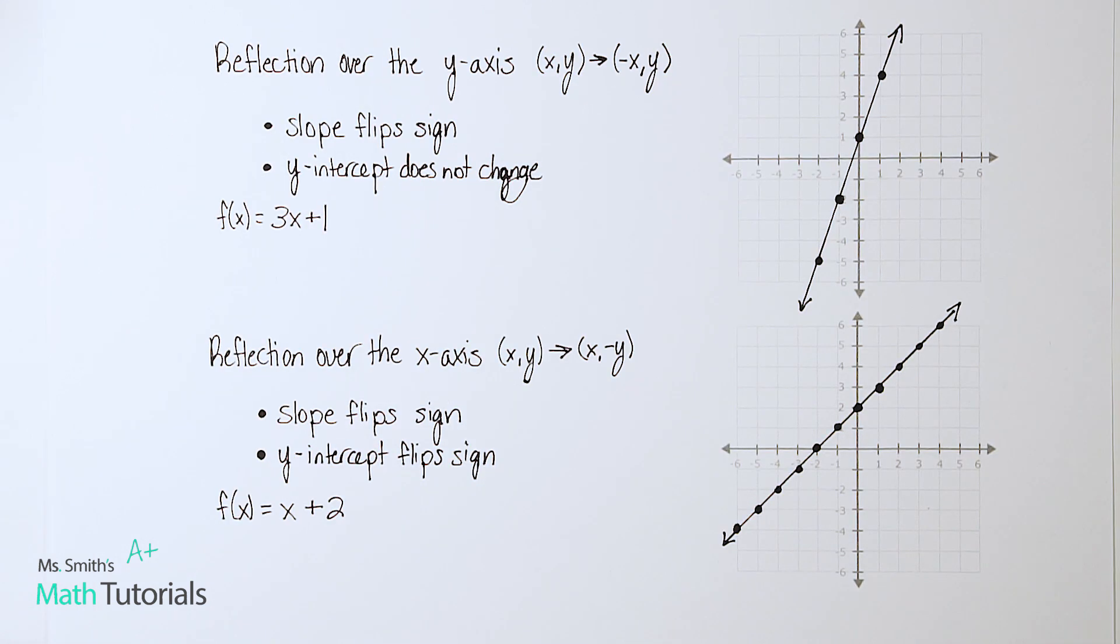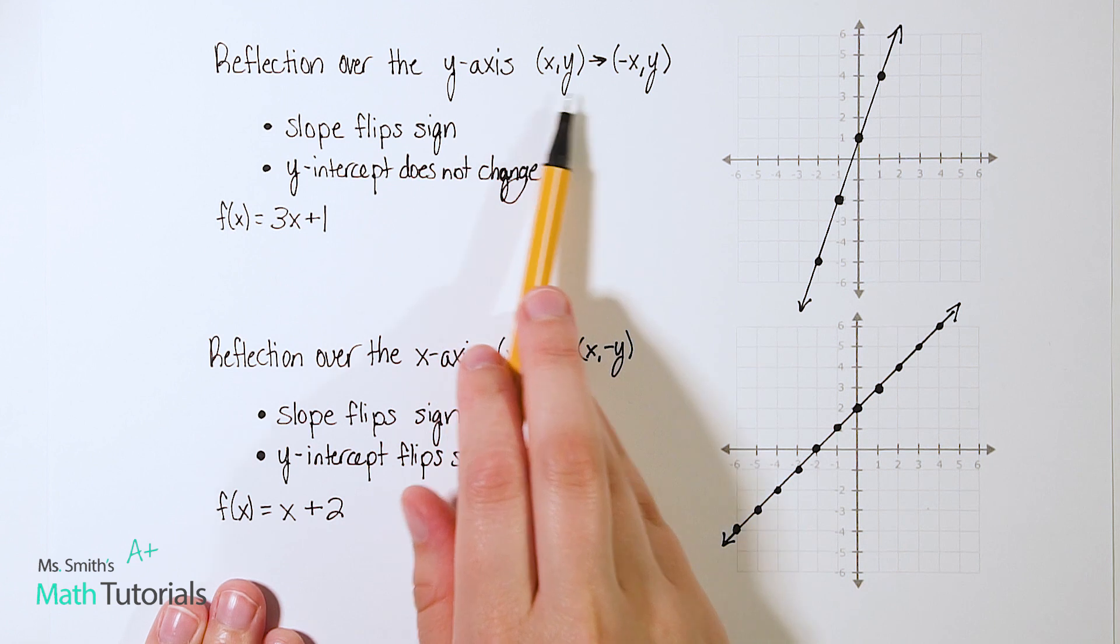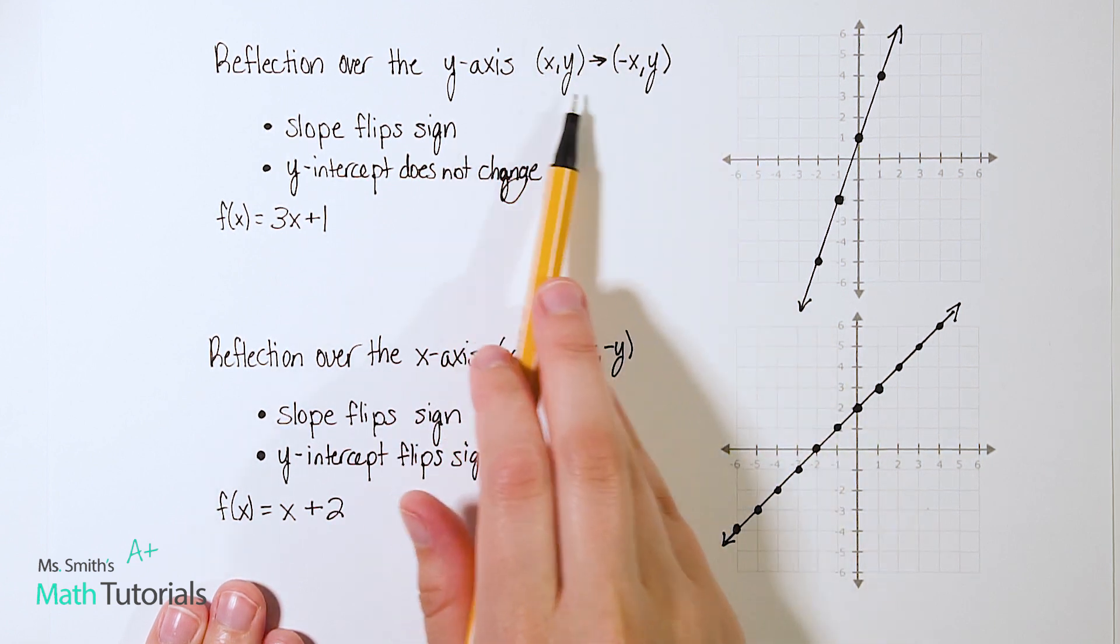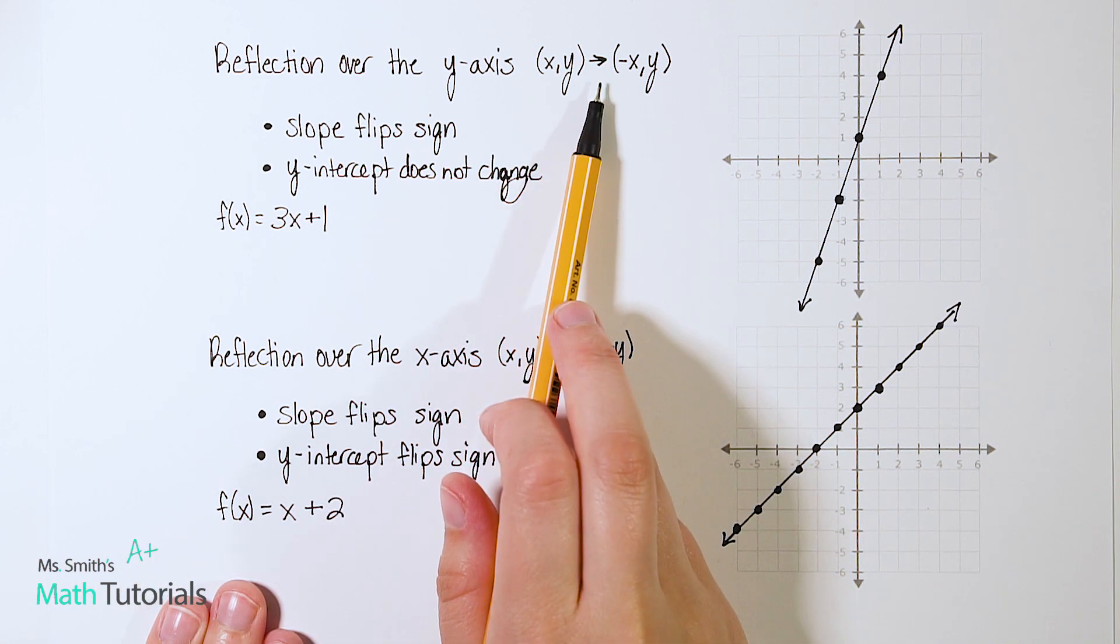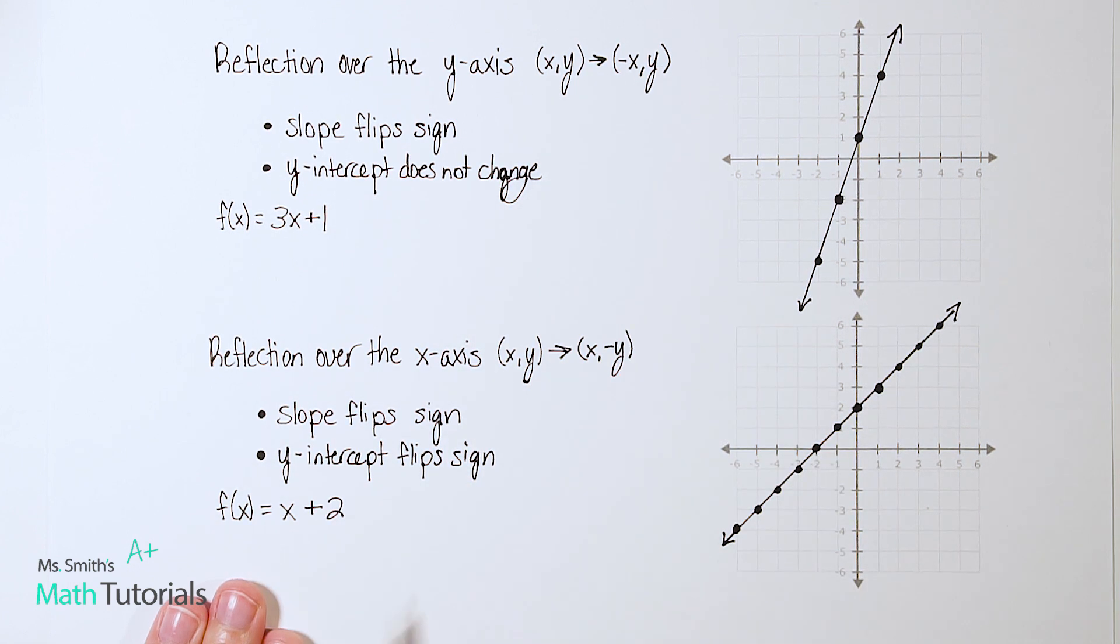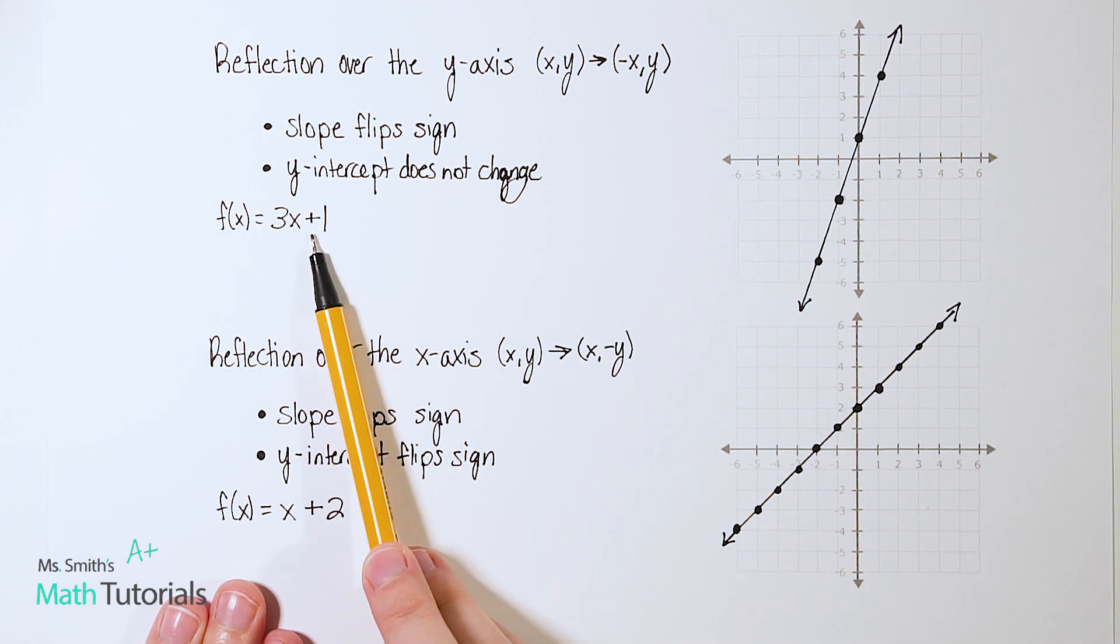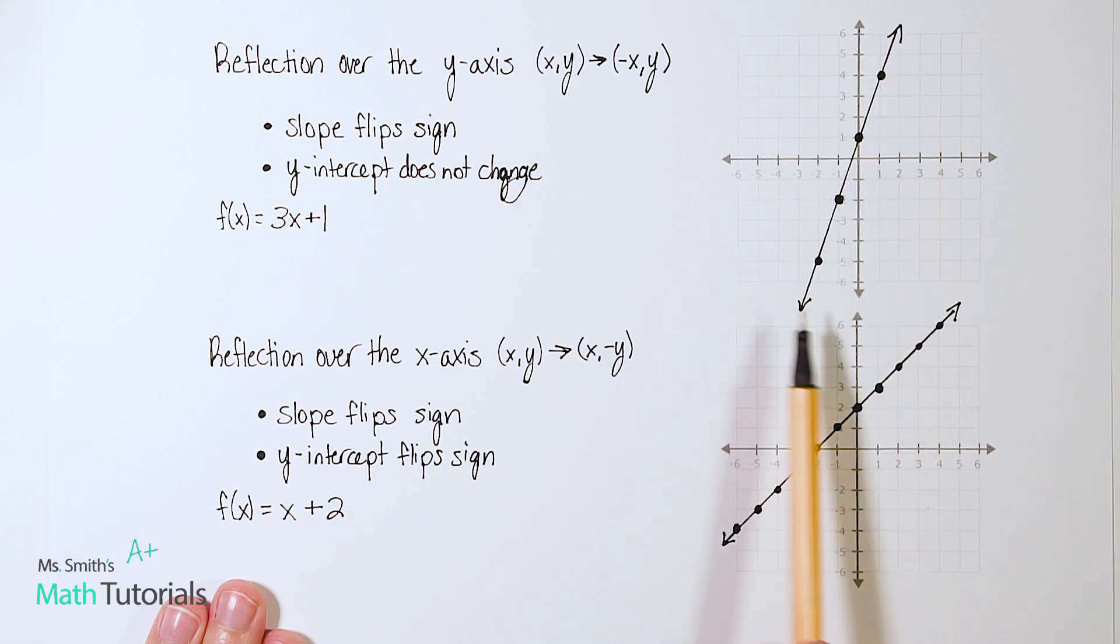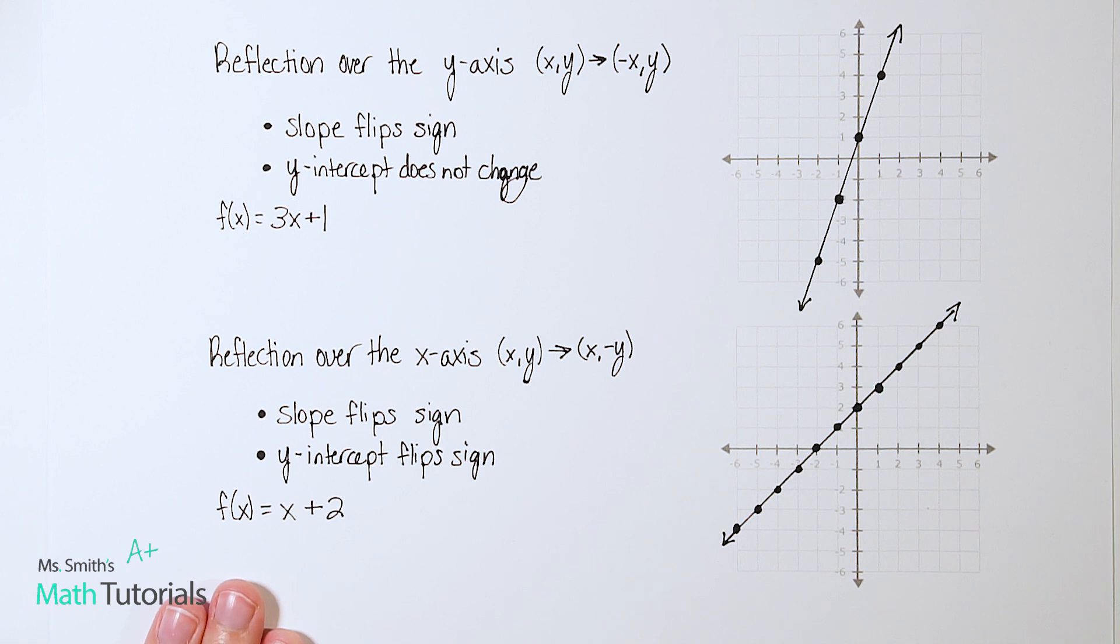Our next type of transformation of linear equations that we're going to look at is a reflection over the y-axis. So I put a little reminder here of that rule, which we talked about in our reflections video. The rule is (x,y) becomes (-x,y), if you need a little reminder of that rule. What happens when I take an equation like this one, f of x equals 3x plus 1, just a random example I came up with of a linear equation. Here is it graphed.